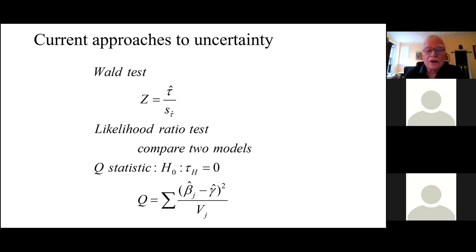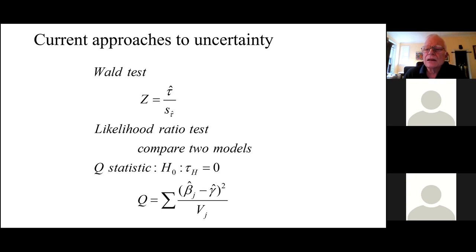Another approach is the likelihood ratio test: run a model where the variance is assumed to be zero — that's just a straight OLS model — then run an HLM-type model where the variance is in the model, compare the fit, get a deviance statistic. The only problem is it's not chi-square, because you're testing at the boundary of the parameter space. It gives you a more complicated sampling distribution — a mixture of chi-squares — and doesn't necessarily behave well at the boundary. And it's not clear how you get a confidence interval out of it. It just answers whether it's zero or not. We want to know what the plausible values of tau are — that's not enough.